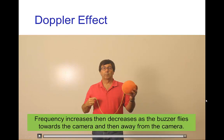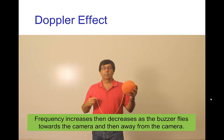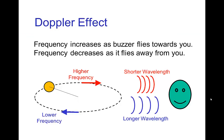With a buzzer swung around, you can hear a variation in pitch — going up when it moves towards you and down when moving away. As the buzzer moves towards you, the waves pile up, resulting in a shorter wavelength and higher frequency. When the buzzer moves away from you, the waves are stretched out — longer wavelength and lower frequency.